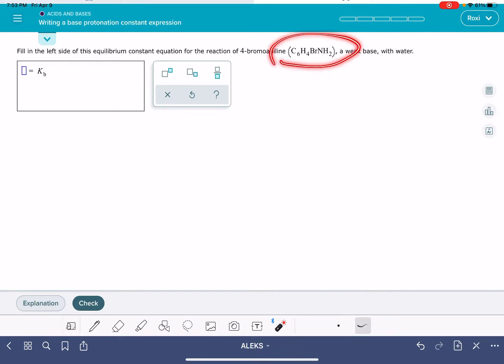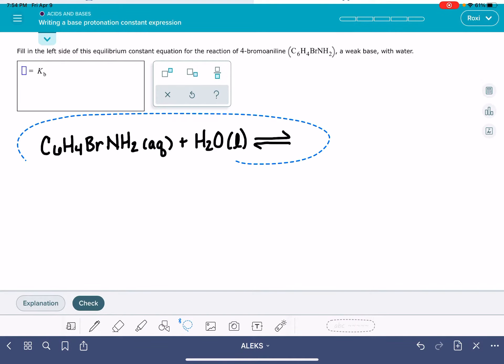you're going to start by writing the formula of the base C6H4BrNH2, and no matter what the base is, this is going to be aqueous. All of these bases in these reactions are going to be reacting with water. The problem tells you that. It's going to be reacting with water, so plus H2O, and water in these reactions is always liquid. These are all going to be equilibrium reactions, so make sure you write your equilibrium arrows.